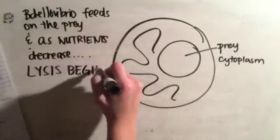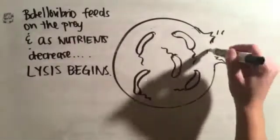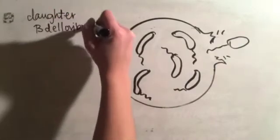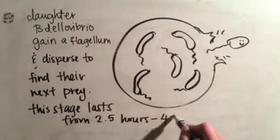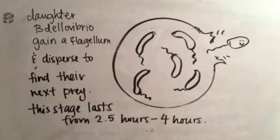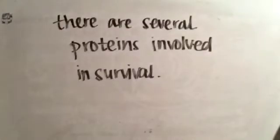Bdellovibrio feeds on the prey and as nutrients decrease, lysis will begin. Daughter Bdellovibrio gain a flagellum and disperse to find their next prey. This stage lasts from 2.5 hours to 4 hours.